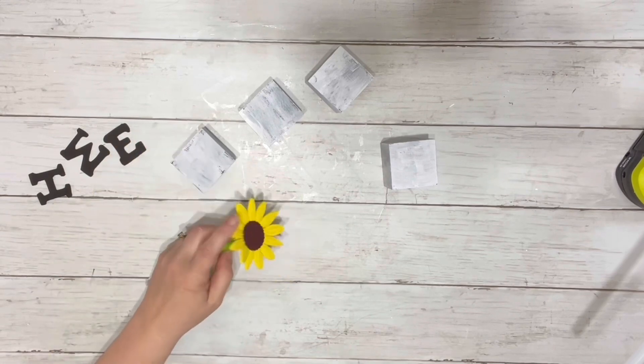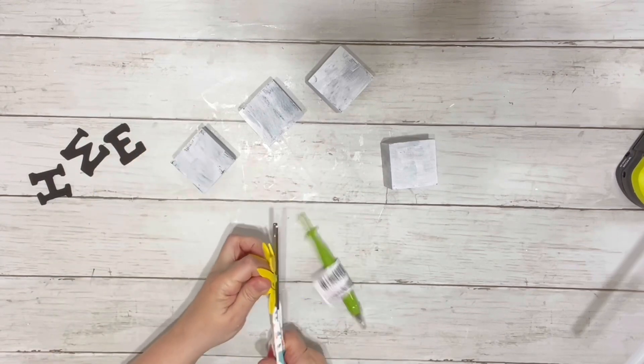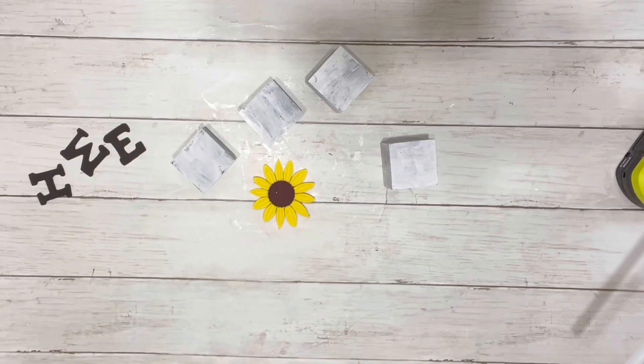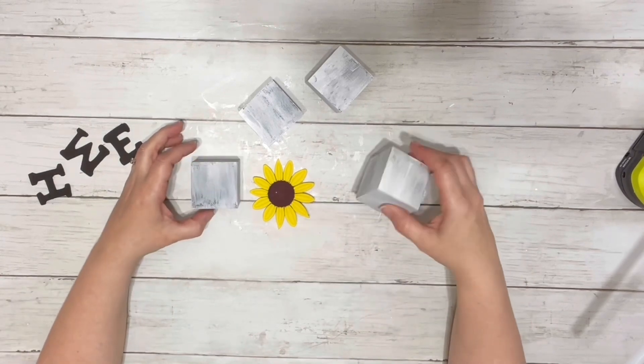Next, when everything was dry, I took the little pen with the sunflower on it and cut the sunflower right off.